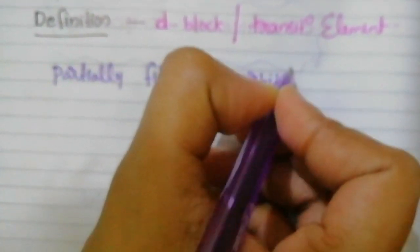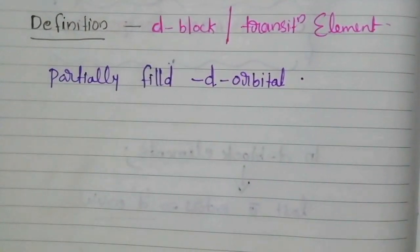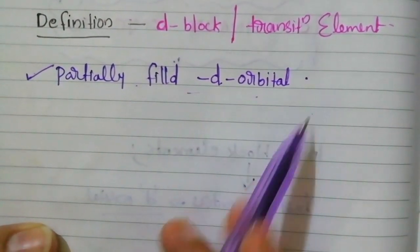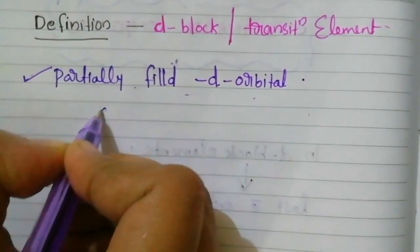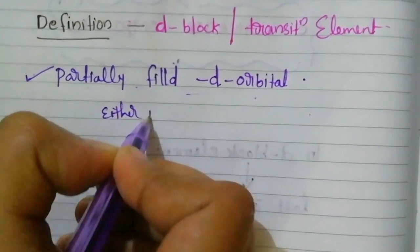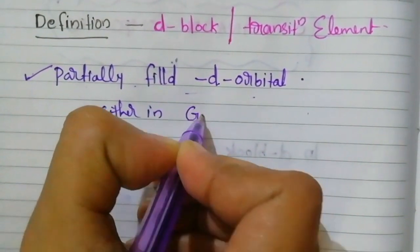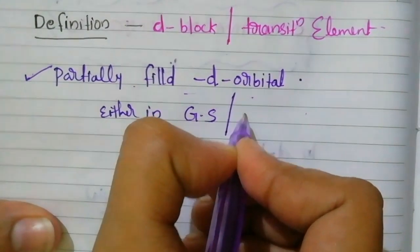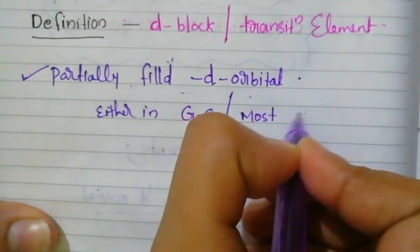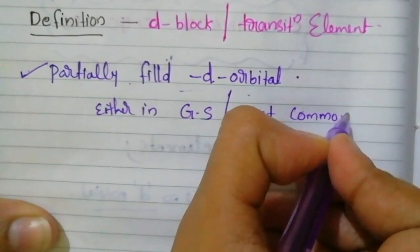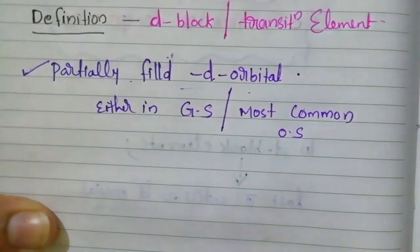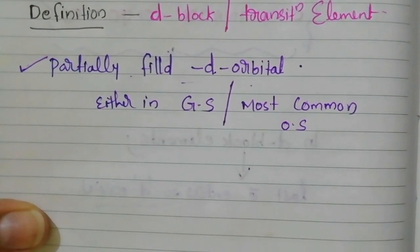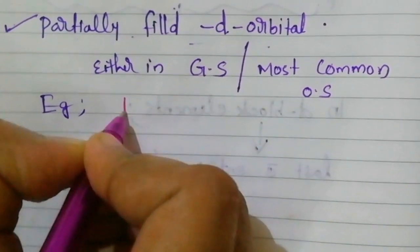The condition for an element to be a D block or transition element is that it should contain a partially filled — or incompletely filled — D orbital. This must be either in the ground state or in the most common oxidation state. So if some elements don't contain an incompletely filled D orbital in the ground state but do contain one in the common oxidation state, we can still consider that element a D block element.